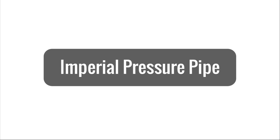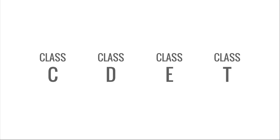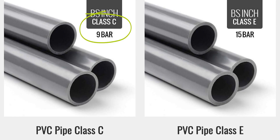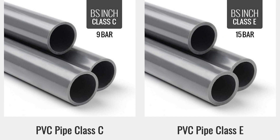Now let's take a look at imperial pipe. Imperial pressure pipe is organized into classes. The common classes you will see are Class C and Class E. Each class will have a pressure rating associated with it. For example, a Class C pressure pipe has a rating of 9 bars and Class E has a rating of 15 bars. You can see that the Class E pipe has an increased wall thickness when compared to Class C.